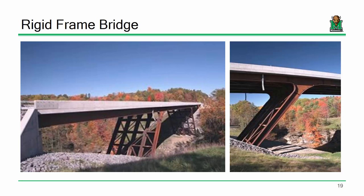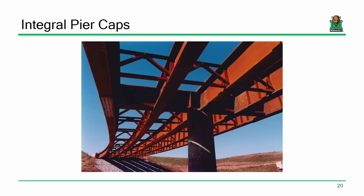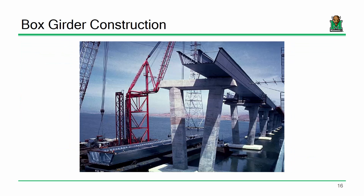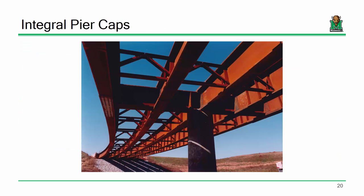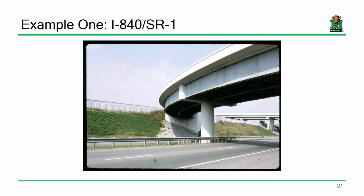We can also erect what I'd call rigid frame bridges where portions of the substructure and superstructure meld together. Another interesting application is the integral pier cap, where instead of beams sitting on a pier with a clear transition between superstructure and substructure, the girders frame into a beam bolted directly to the column — integrating the pier and the girders into a single assemblage.